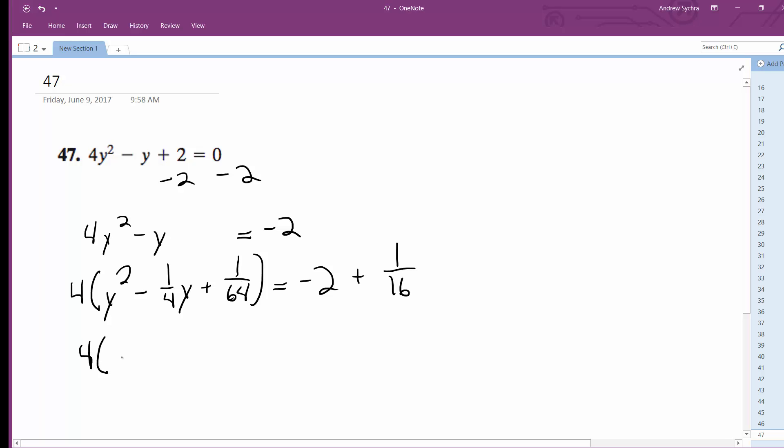This becomes 4 times quantity y plus 1 over 8 squared is equal to negative 31 over 16.